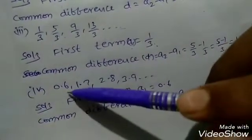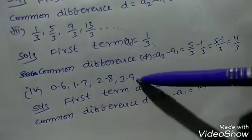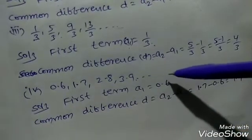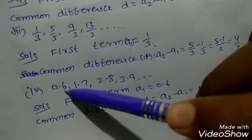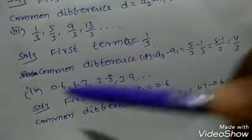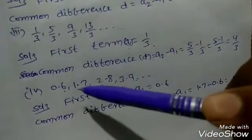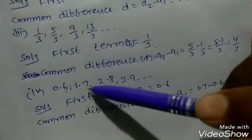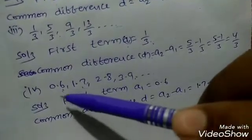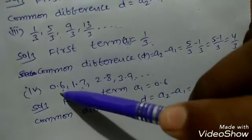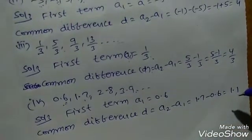Fourth sequence: 0.6, 1.7, 2.8, 3.9 and so on. First term a1 equals 0.6. Common difference d equals a2 minus a1, that is 1.7 minus 0.6 equals 1.1.